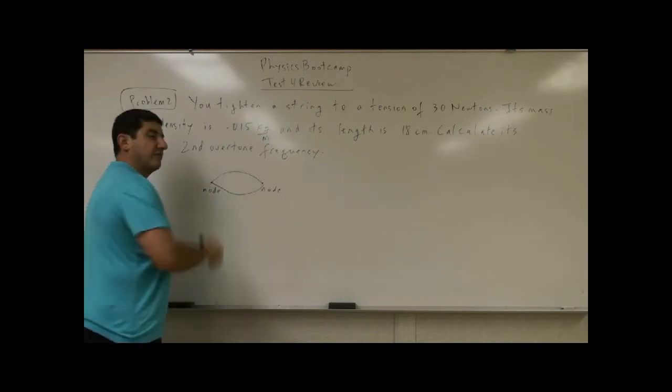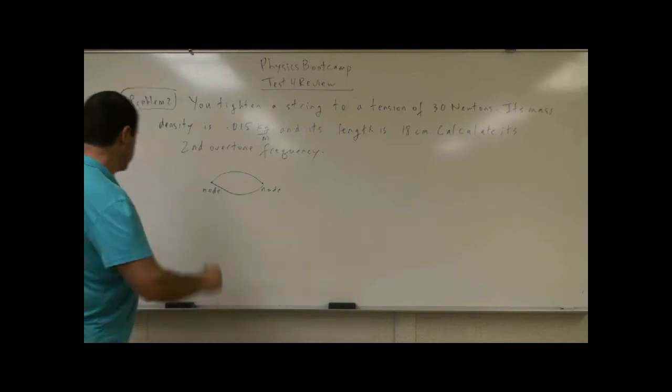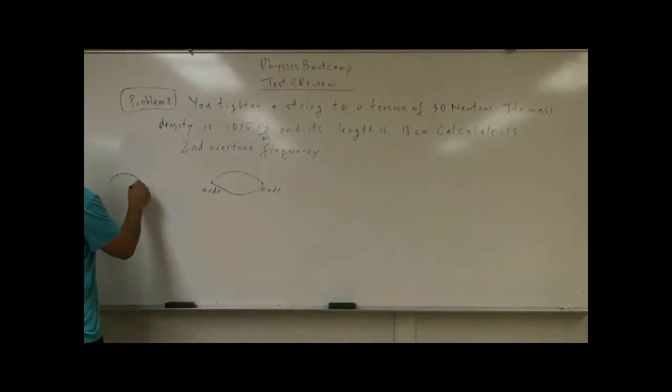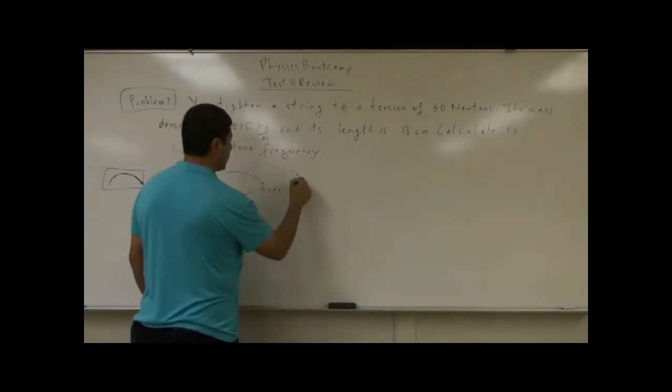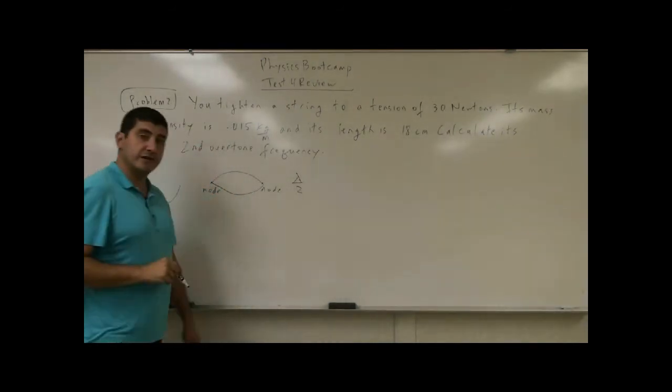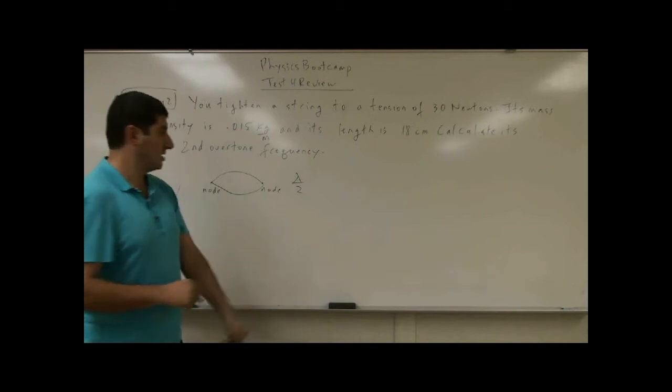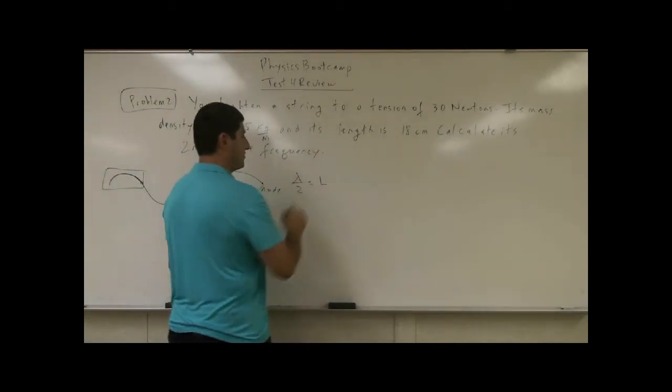So what part of a wavelength is that? A complete wave is up, down, and back up, right? So this is actually half a wavelength, up and down. So a half a wavelength of the wave that you are generating has to fit within the length of the string.